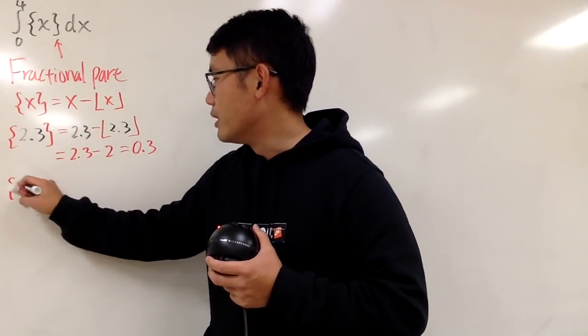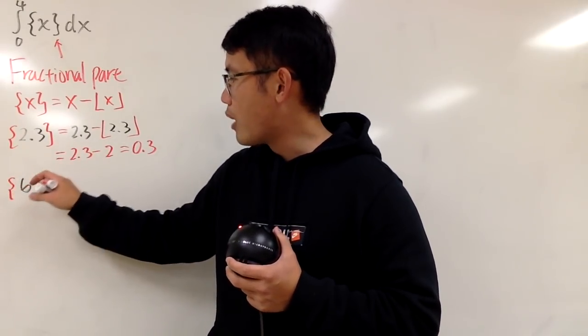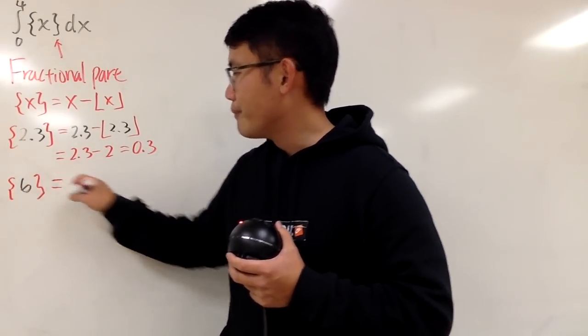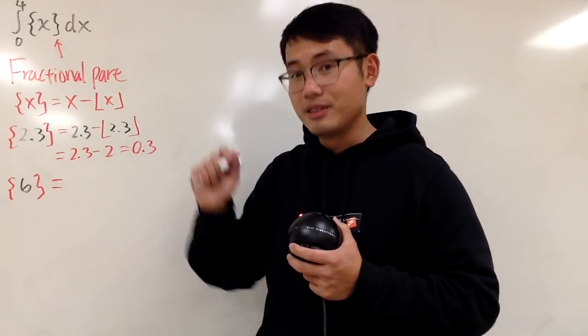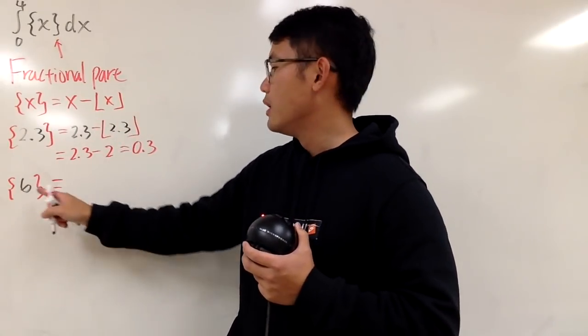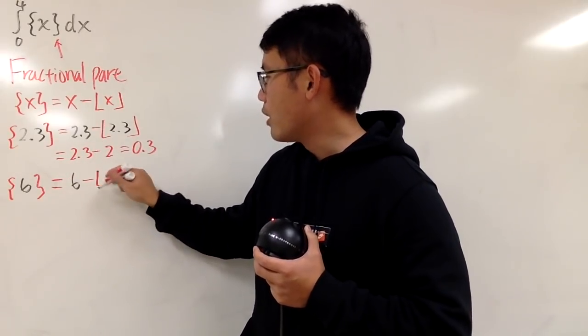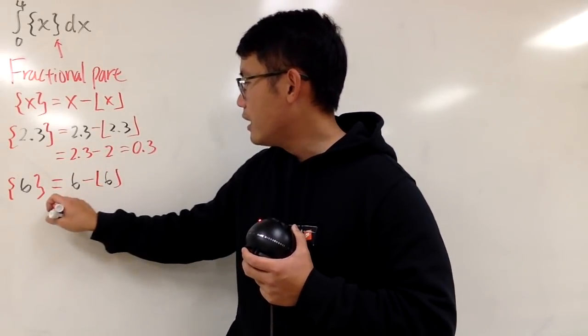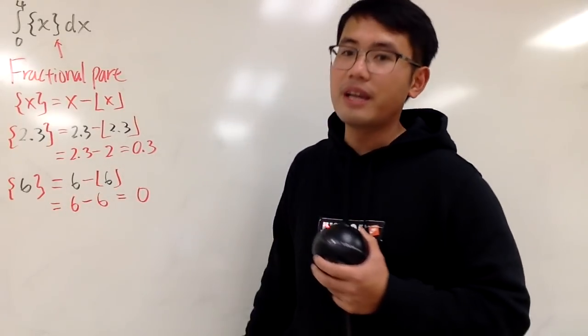And let's do a whole number. If you have a whole number in here, let's say the fractional part of 6, well, there's no fractional part of a whole number, so you just get 0. And of course, you can also use this little definition. You can put 6 right here, and then minus the floor of 6. Here you get 6, minus this is still 6. Of course, as I said, you get 0.